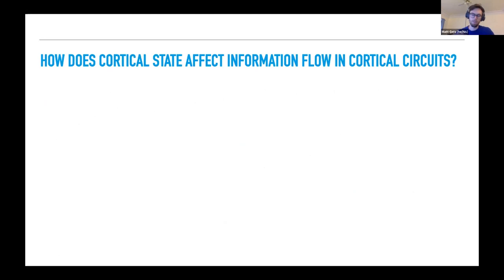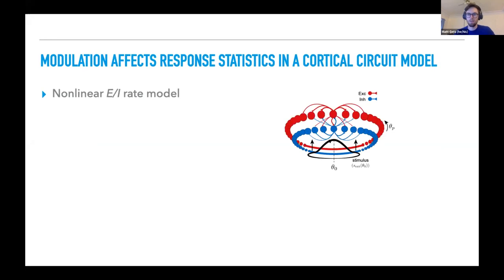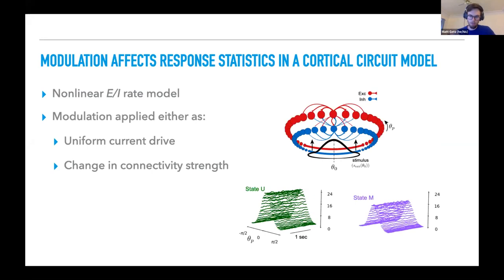The question we're after is how cortical state affects information flow. So we need to set up some assumptions and basis for building our model. The first thing is that state changes can be local or global. So we're considering things like feedback driving neuromodulation. But axiomatically, we're going to assume that state changes only affect circuit activity independent of a stimulus for some external inputs. So if we consider a nonlinear EI rate model, where we have EI pairs oriented around a ring, position on that ring corresponds to a unit's preferred value of a tuning variable theta.